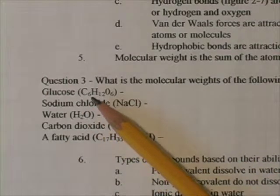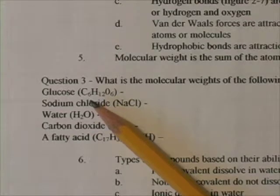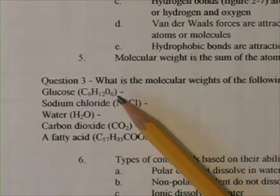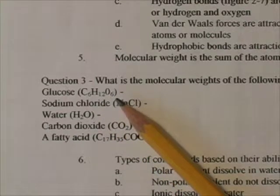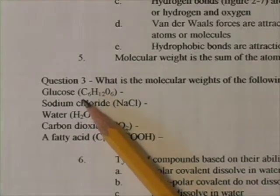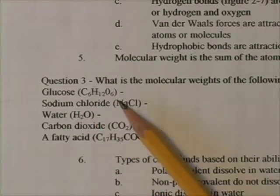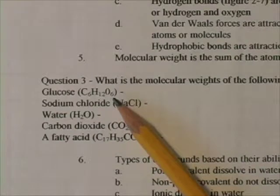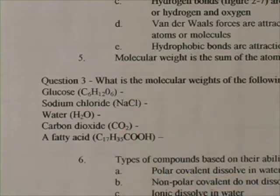Take glucose. You'll hear me talk about glucose a lot. The formula for glucose is C6H12O6. This means it has 6 carbon atoms, 12 hydrogen atoms, and 6 oxygen atoms. What's the molecular weight of glucose?